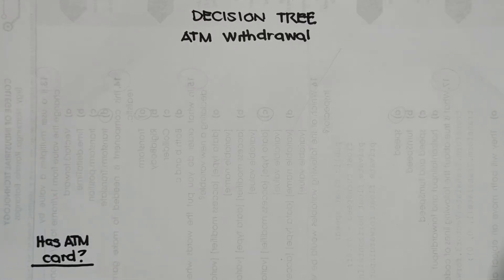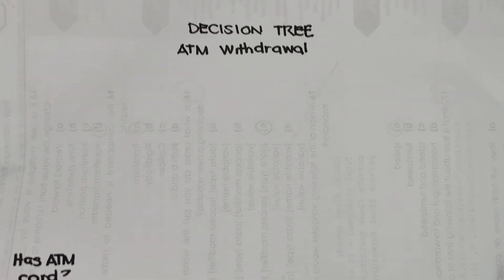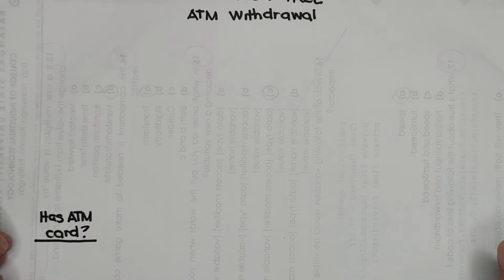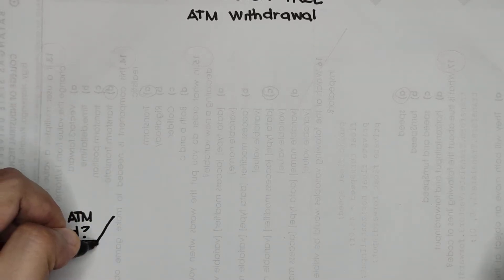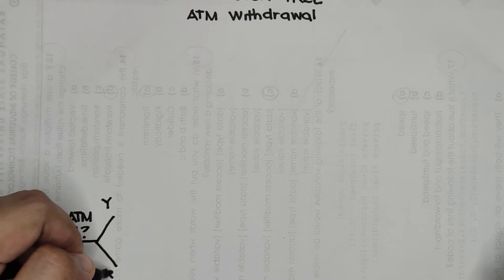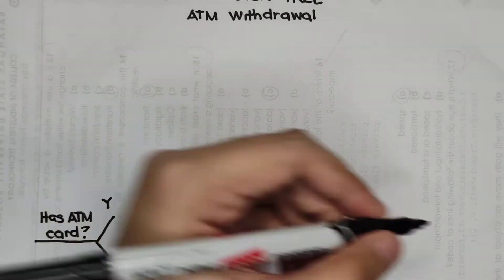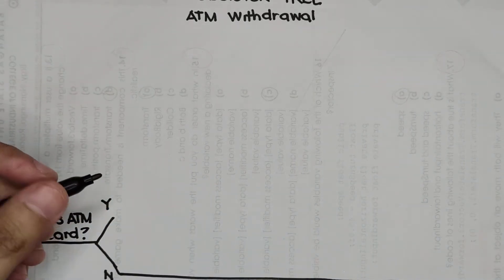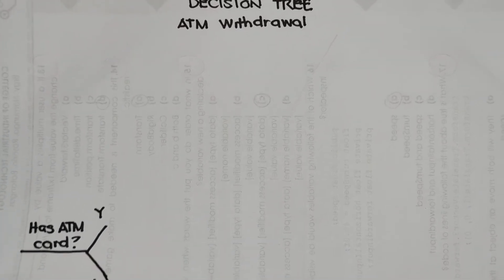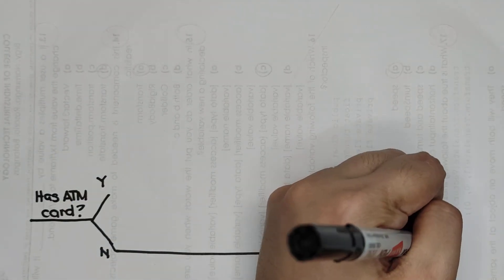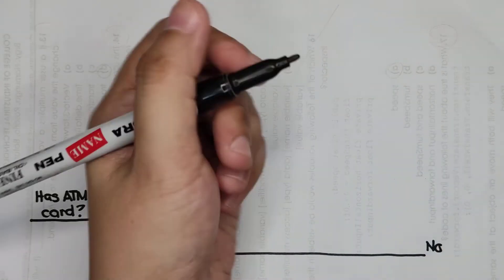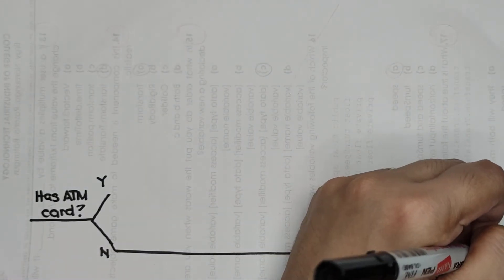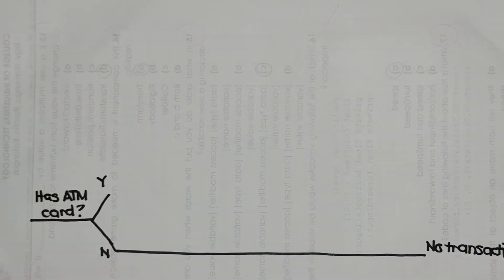Your question should be formed which is answerable by yes or no. Again, the question is formed which is answerable by yes or no. Then let's create a branch for the yes and we have for the no. If it is a no, then we will have no transaction.